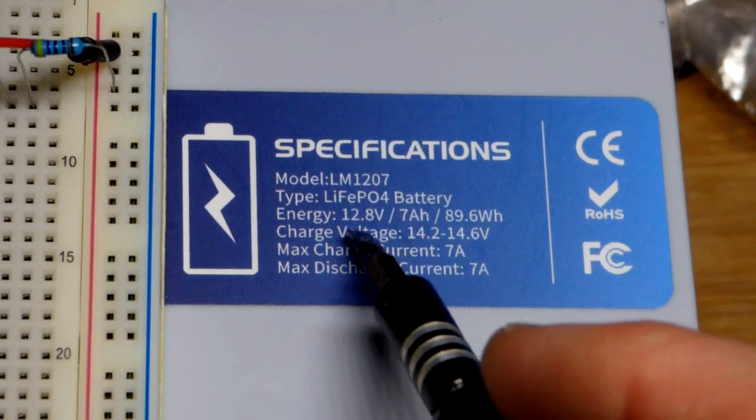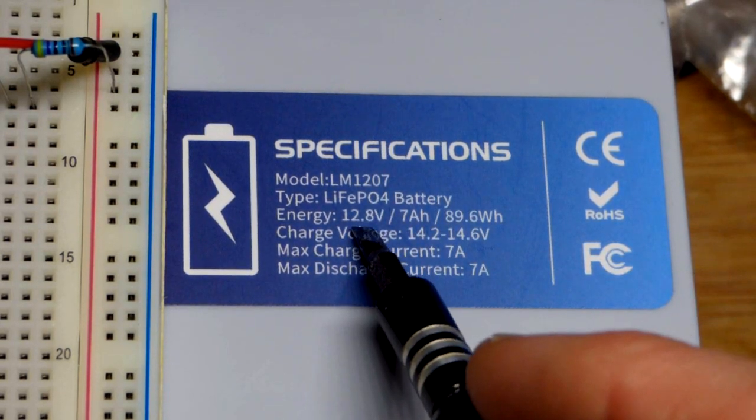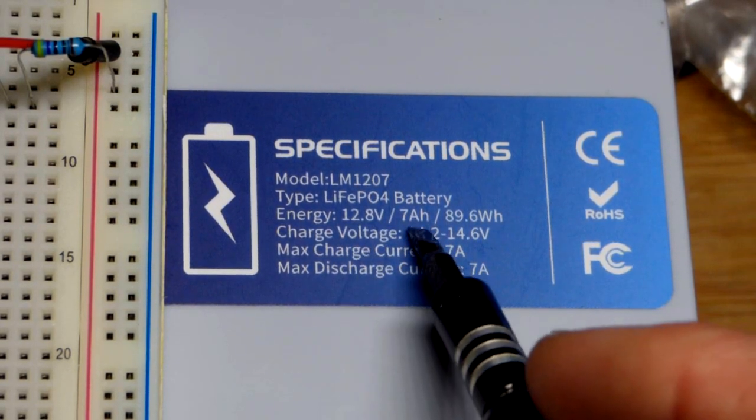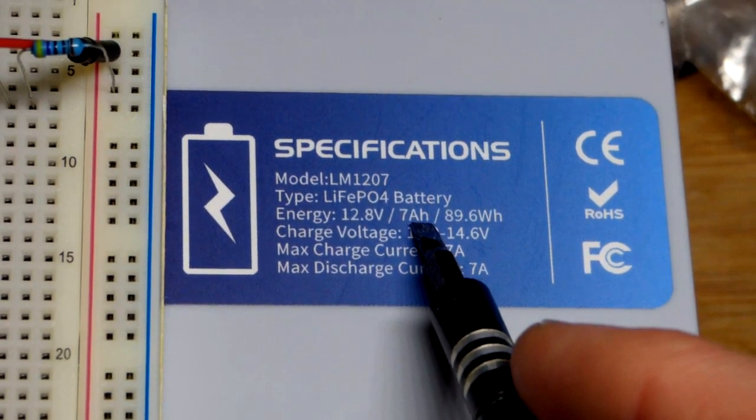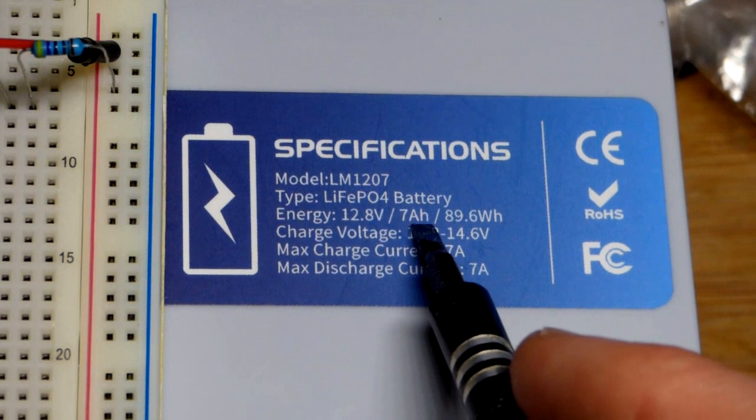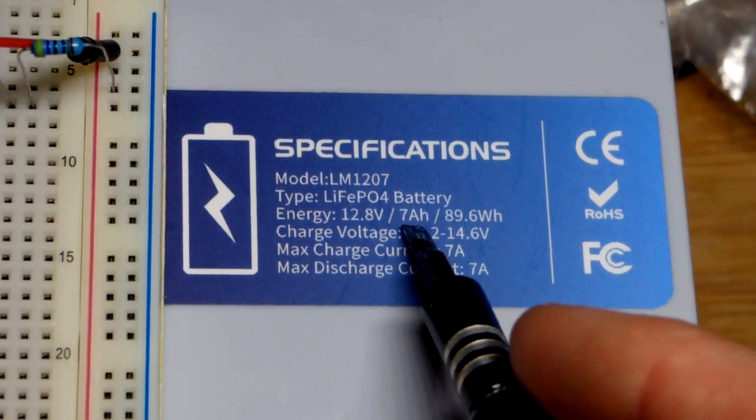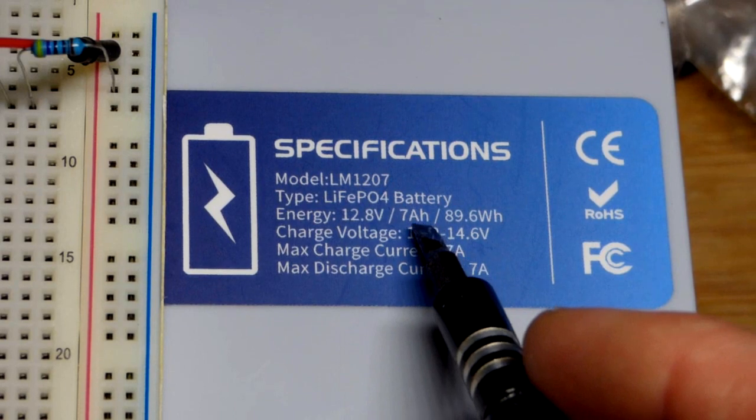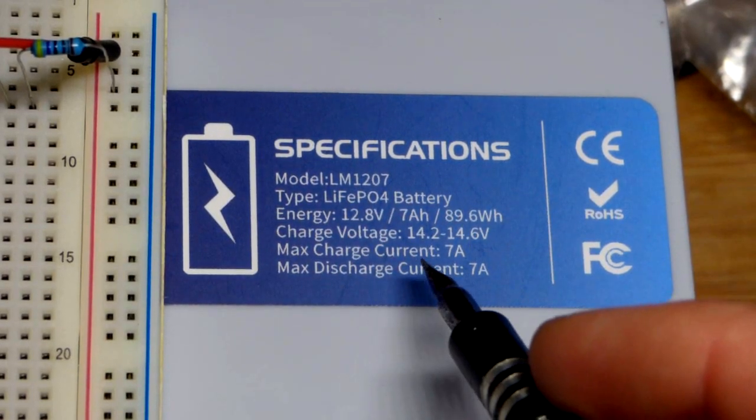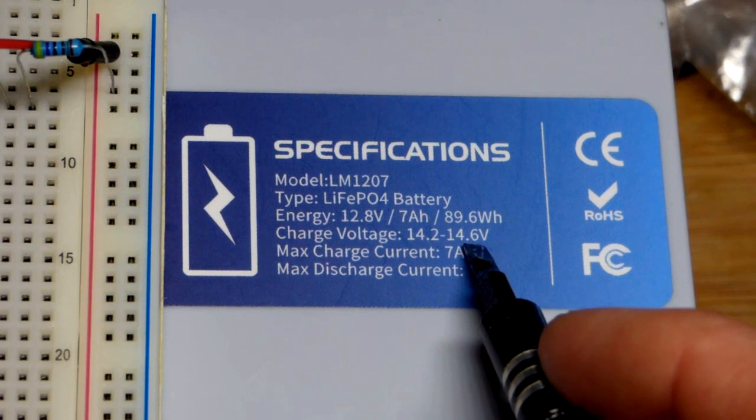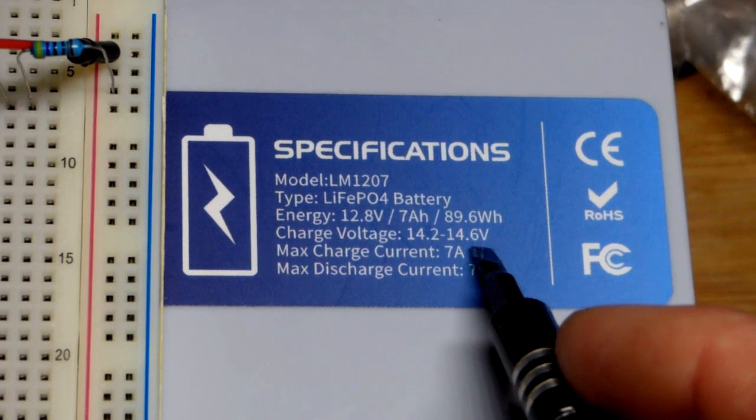And so we got specifications written on here, 12.8 volts, that's the nominal voltage. And then these are 7 amp hour batteries. So we were using .014 amps basically in that range, and so it would take hundreds of hours to fully discharge this with this circuit right there.